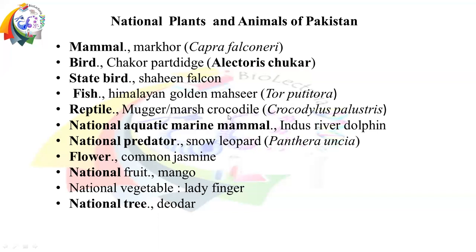The national reptile is the Mugger Crocodile, also called the marsh crocodile. The national aquatic marine mammal is the Indus River Dolphin. The national predator is the Snow Leopard, whose scientific name is Panthera uncia.